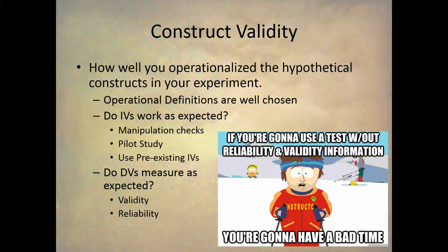It comes down to this: you're going to take a construct such as helping behavior and ask how are you going to measure that? You need an operational definition to measure that. For example, we operationally define it as the number of boxes somebody will move for us if we ask them. All constructs should make sense — if somebody is being more helpful, they'll move more boxes; if less helpful, they'll move fewer boxes. So that is a good operational definition.